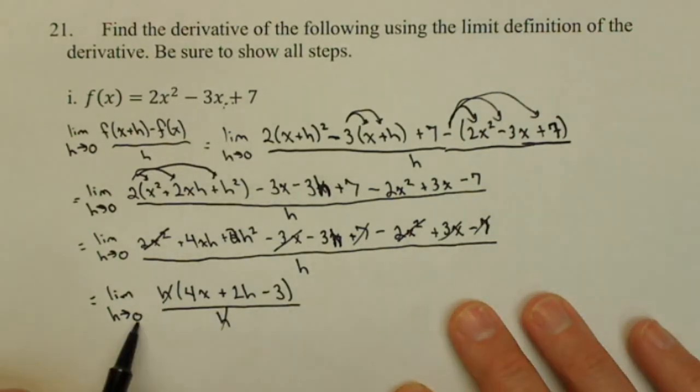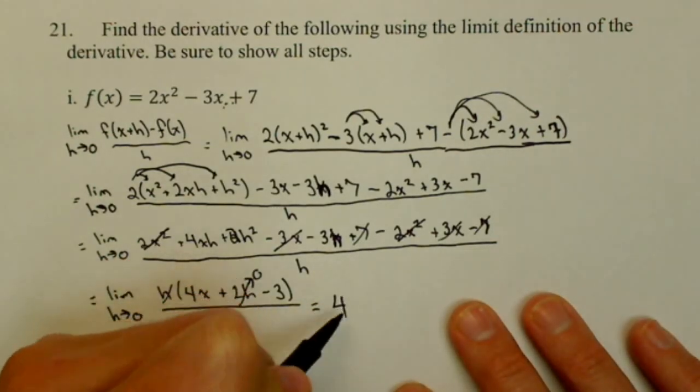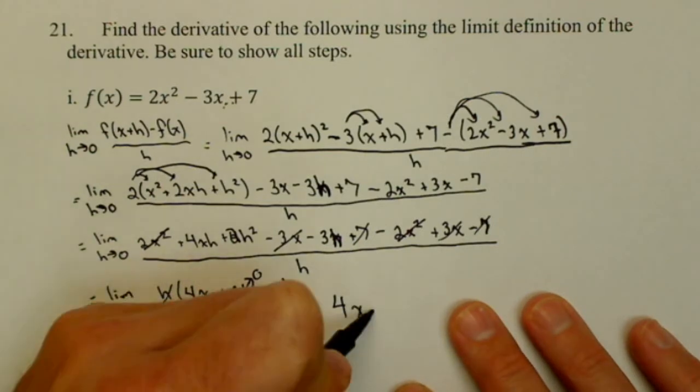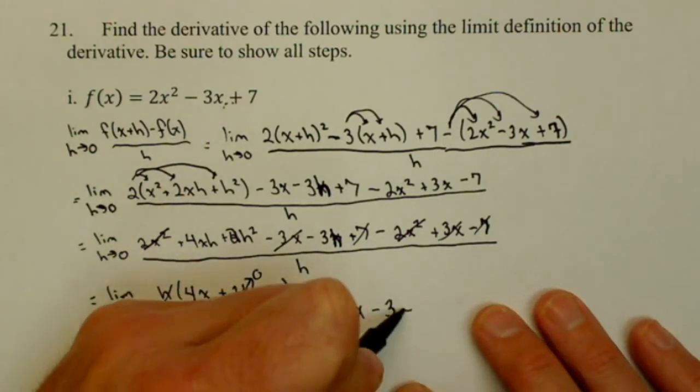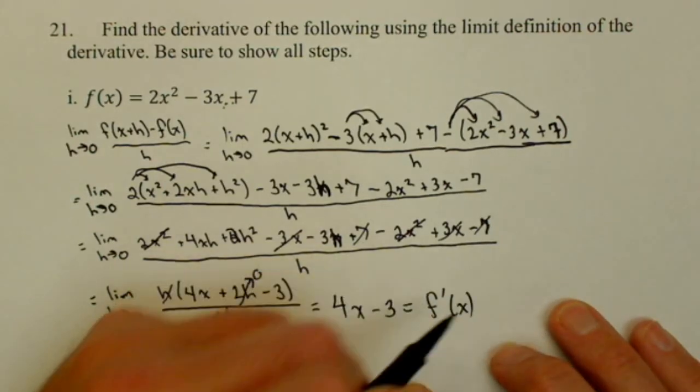Now I can, by direct substitution, plug the 0 in. It's going to make that term go to 0, and I get my derivative is 4x minus 3 is equal to my f prime of x.